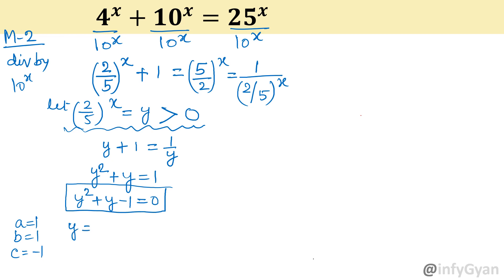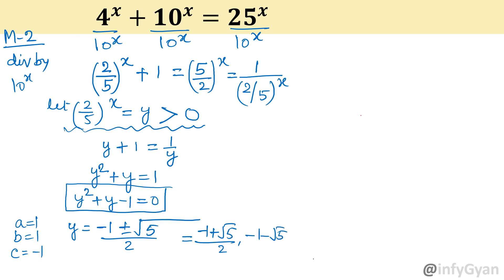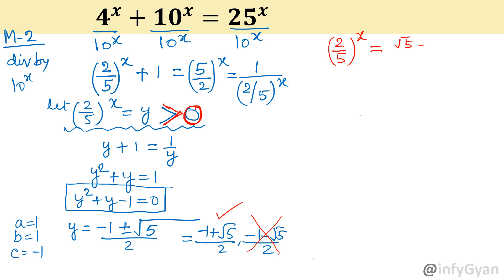Apply the quadratic formula. So two roots: (minus 1 plus root 5) over 2, and (minus 1 minus root 5) over 2. Important point — y value is always positive, so the second root cannot be accepted. What is left is (minus 1 plus root 5) over 2. So let us put the value of y: (2 over 5) whole power x equals (root 5 minus 1) over 2.